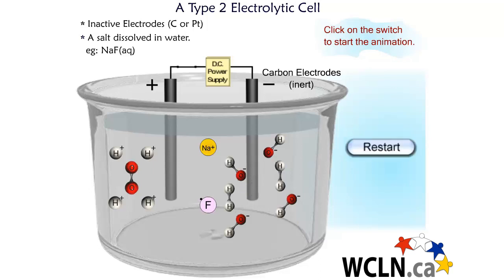The challenge with a type 2 electrolytic cell is determining which particles are going to be oxidized and which are going to be reduced. If you look below the animation, the lesson states that you need to locate all substances present on your standard reduction potential table. The species reduced will be the highest one on the left side, and the species oxidized will be the lowest one on the right side. For this cell, water is both highest on the left and lowest on the right.